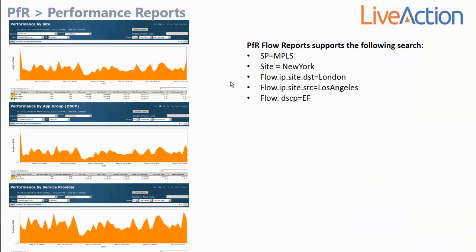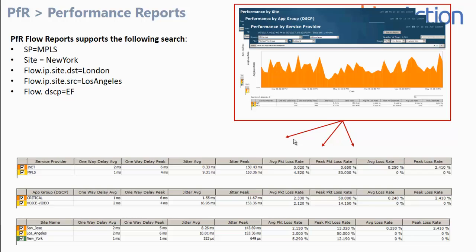There are three PFR performance reports — since these are based off PFR flow data, only a subset of search capabilities are available. There is a performance by site report, performance by application group, and performance by service provider report. LiveNX continuously captures and learns jitter, loss, and delay measurements. By using these different reports and search capabilities, you can focus in and understand the health of the WAN environment. PFR is continuously measuring and reporting back to LiveNX the health of each channel or VPN of the environment — it's very powerful.